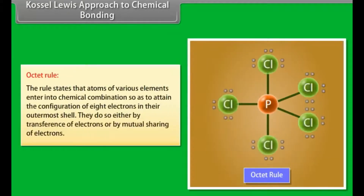Octet rule. The rule states that atoms of various elements enter into chemical combination so as to attain the configuration of eight electrons in their outermost shell. They do so either by transference of electrons or by mutual sharing of electrons.